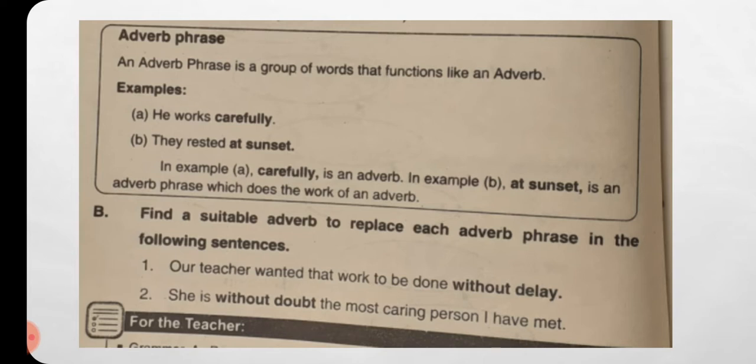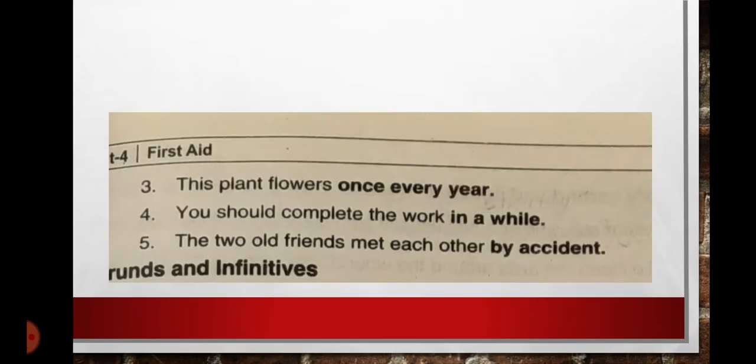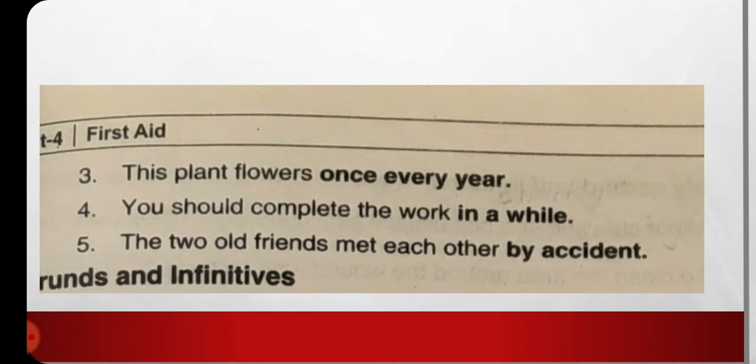Now we have: find a suitable adverb to replace each adverb phrase in the following sentences. Here we have been given adverb phrases and we are to replace them with an adverb. First: 'Our teacher wanted that work to be done without delay' — we replace it with 'immediately'. Second: 'She is without doubt the most caring person I have met' — we use 'undoubtedly', because 'without doubt' was a phrase.